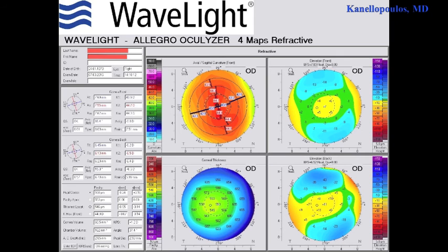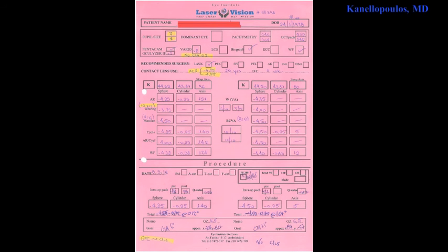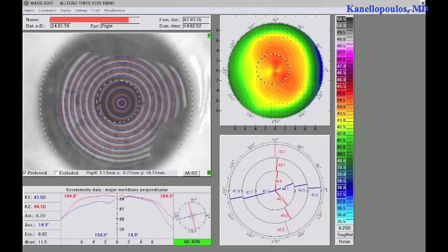This is a young myopic patient, nothing important on the pentacam, good thickness. This is a refraction, minus 4, very little astigmatism, minus 0.25 as you can see here, also on wavefront.